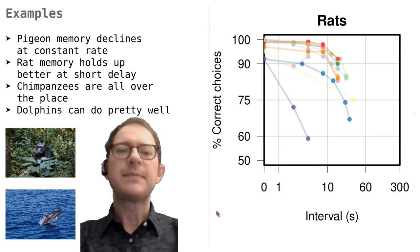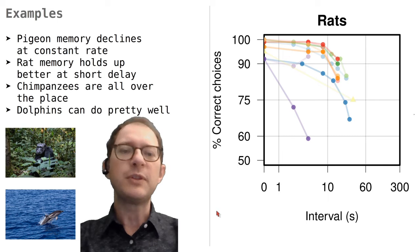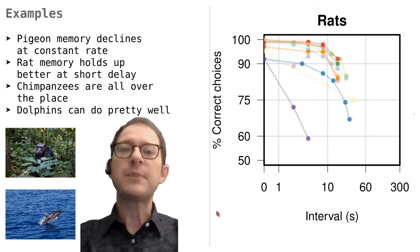These data are from rats. They show the same consistency as pigeons, more or less, but their memory shows a different pattern, where the memory is very good at short delays, showing almost no decay, but then it declines rather steeply. This is in contrast with the pattern we saw in pigeons, in which the rate of decay was pretty much constant.